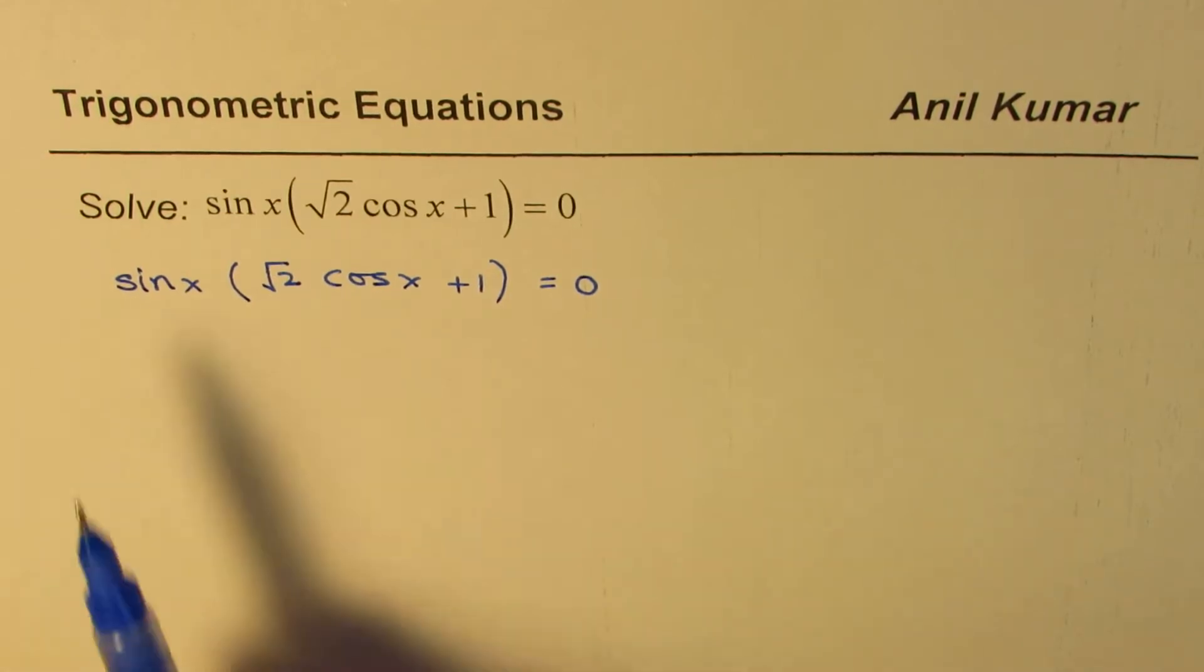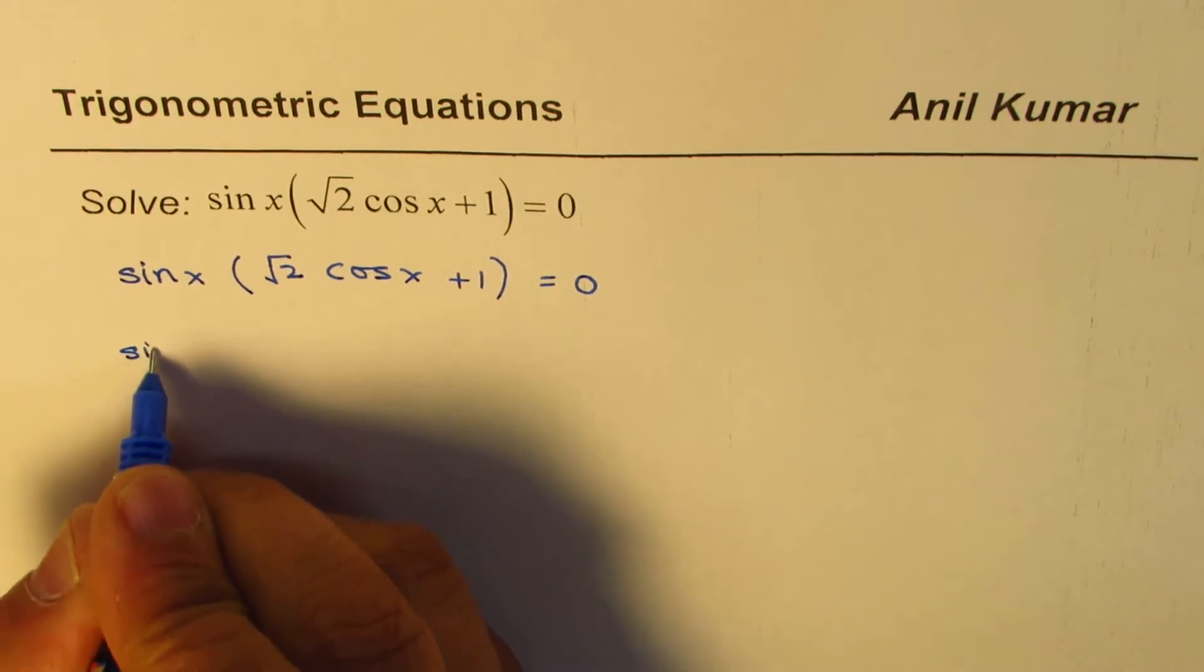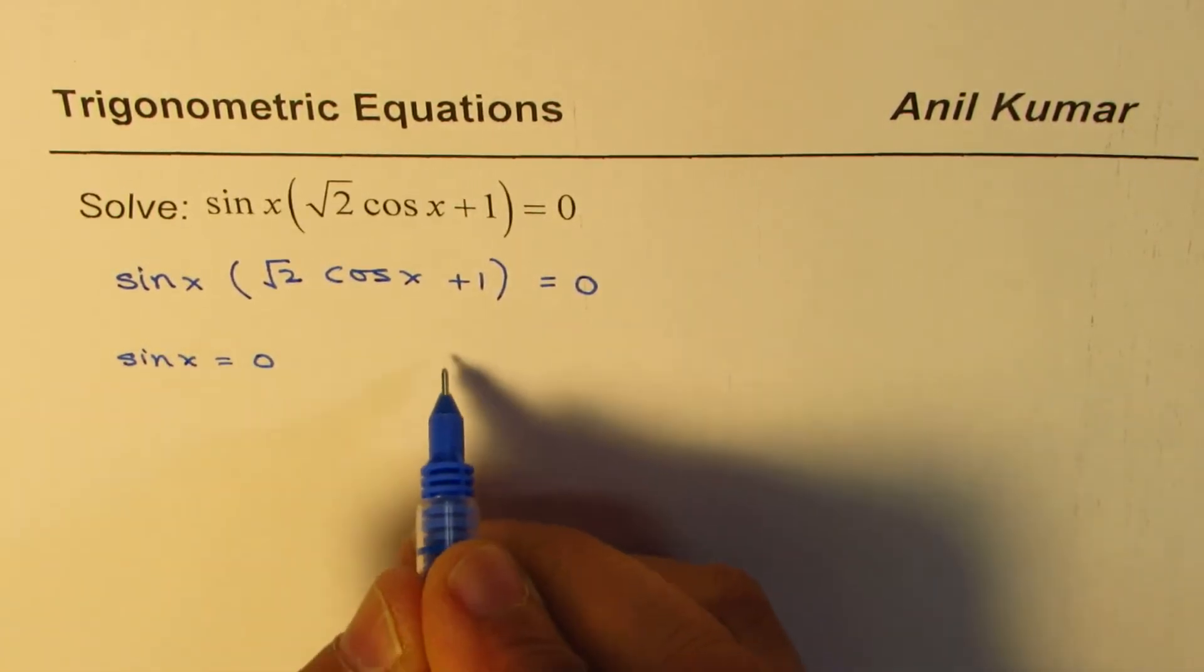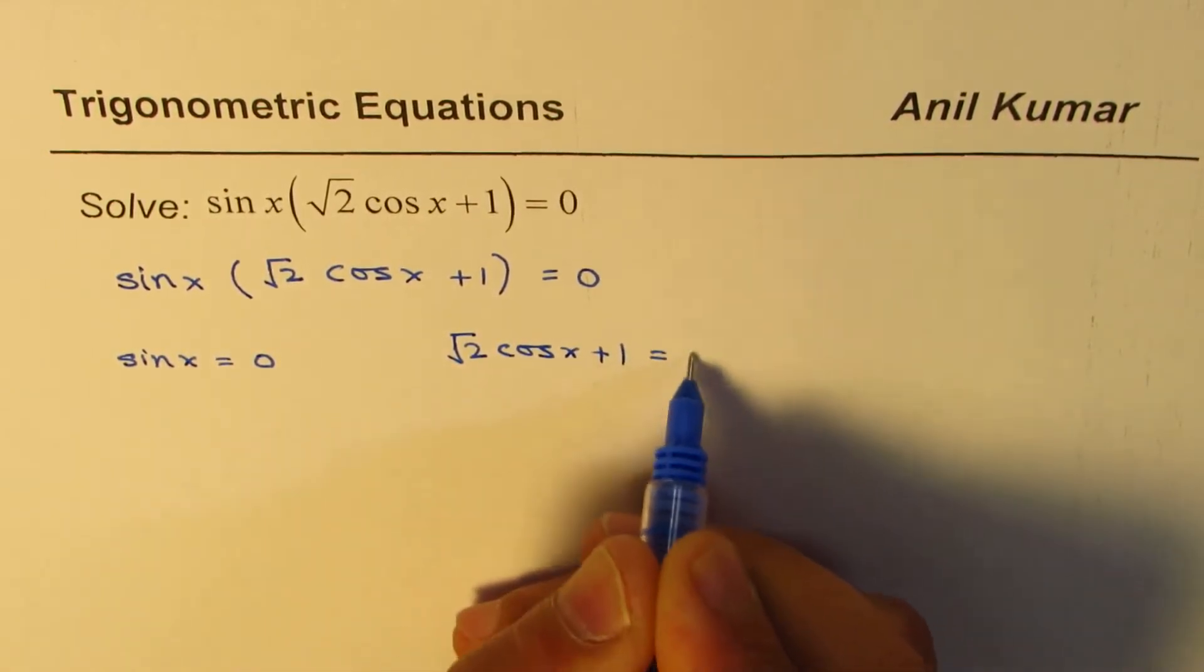One set of solutions will be because of sin x equals to 0. The other set will be because of square root 2 cos x plus 1 equal to 0.